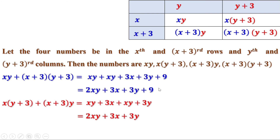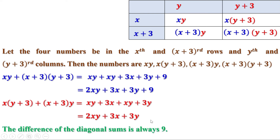Now look at these two expressions. This is 2xy plus 3x plus 3y. This is 2xy plus 3x plus 3y plus 9. Clearly, this is 9 more than this. Therefore, the difference of the diagonal sums is always 9.